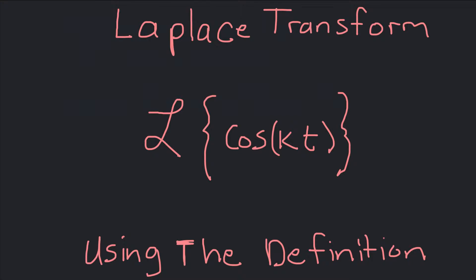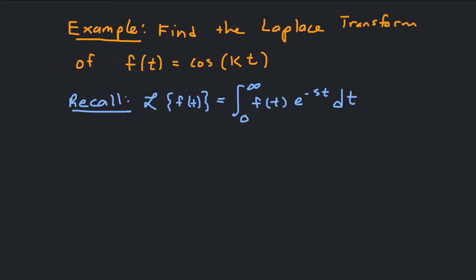In this video we're going to talk about finding the Laplace transform of cosine kt. This is a standard result you're just going to memorize after we do it, and then a bunch of other functions you're just going to memorize the result. But going through a computation like this one time is good for the soul — as one of my old mentors used to say, computation is good for the soul. So our example: find the Laplace transform of f(t) equals cosine kt.